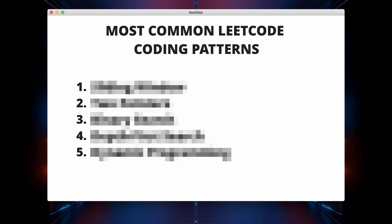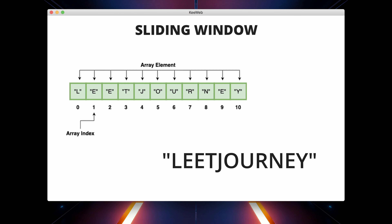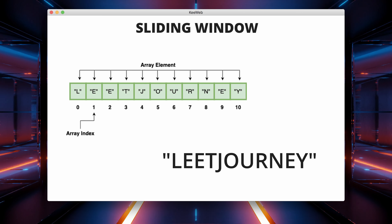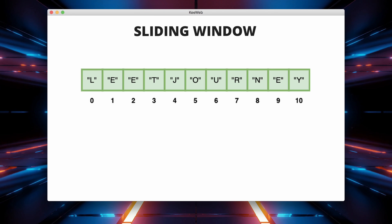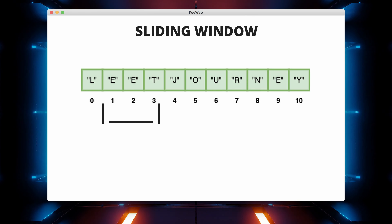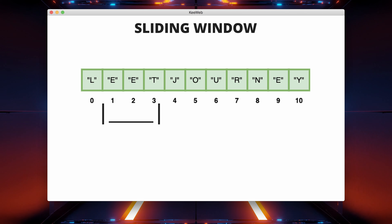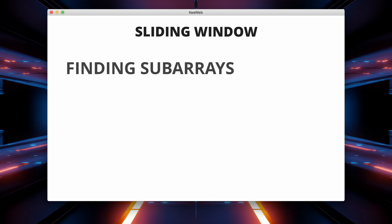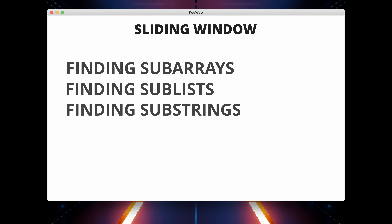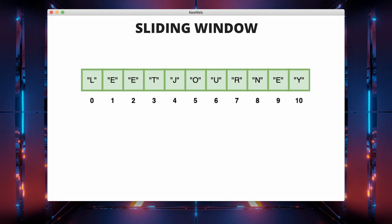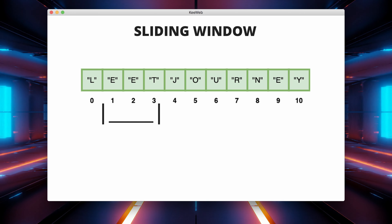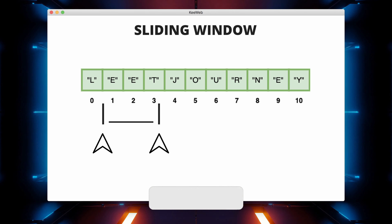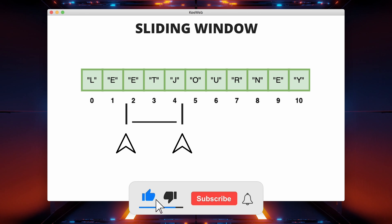The first pattern on our list is the sliding window. The sliding window pattern is a technique used in programming and competitive coding, particularly in solving problems related to arrays and strings. It involves maintaining a set of elements within a window that can slide through the array or string. The window's size can vary and it's often used to efficiently perform operations like finding subarrays, sublists or substrings that satisfy certain conditions. The sliding window pattern typically consists of two pointers — a left pointer and a right pointer — which define the current window, and as the window slides, the pointers are adjusted accordingly.